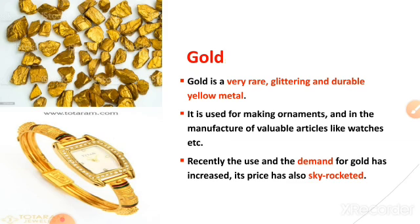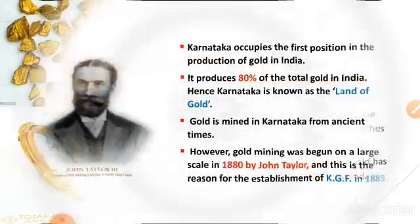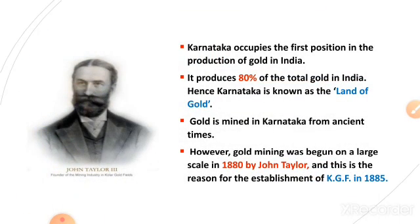Gold is used for making ornaments and in the manufacture of valuable articles like golden watches, rings, and chains. Its production is limited, so the demand for gold and its price have increased. Karnataka is the leading producer of gold in India, producing 80% of the country's gold. That is why Karnataka is also called the 'land of gold.'